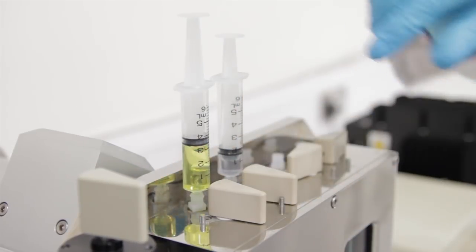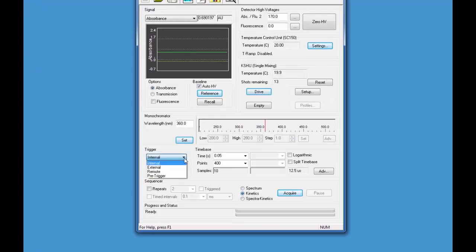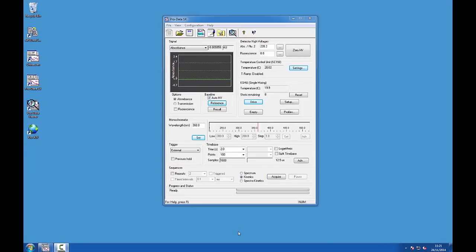On the spectrometer control panel, make sure that kinetics is selected in the sequencer and select external from the list in the trigger panel to activate the stop-flow operation. On the time base panel, choose an appropriate acquisition time based on the expected timescale of the reaction.